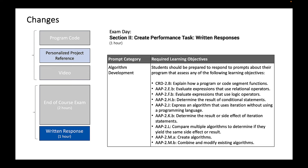Second category: algorithm development. Learning objectives include: explain how a program or code segment functions; evaluate expressions that use relational operators; evaluate expressions that use logic operators; determine the results of conditional statements; express an algorithm that uses iteration without using a programming language; determine the result or side effect of iteration statements; compare multiple algorithms to determine if they yield the same side effect or result; create algorithms; combine and modify existing algorithms.